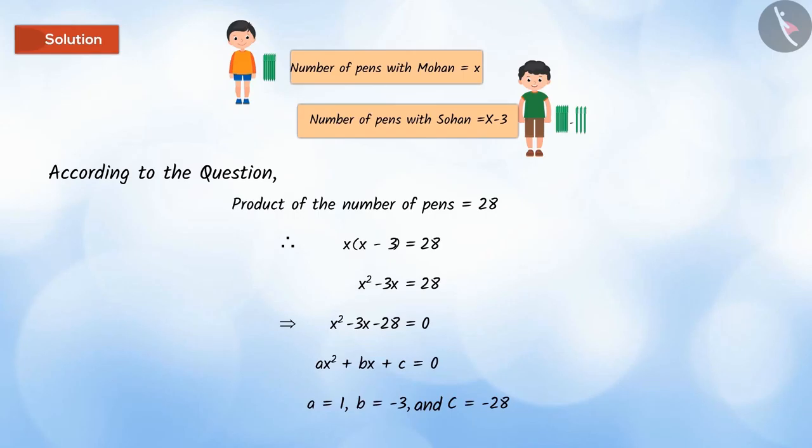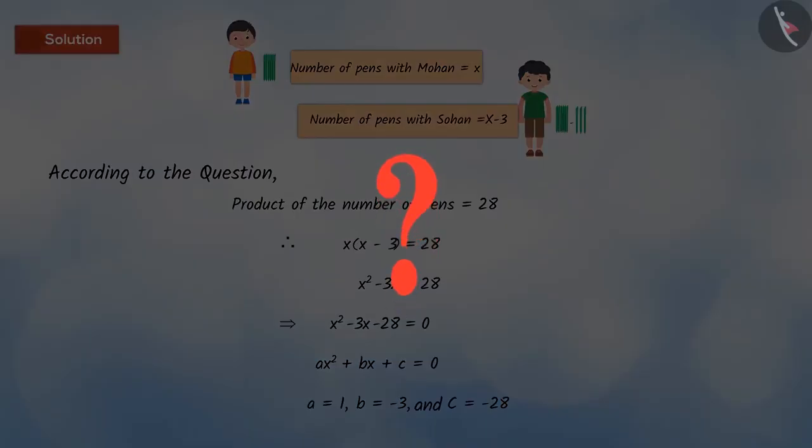What do we have to do now? Now, we have to find out the nature of the roots to check the possibility of the situation given in the question.